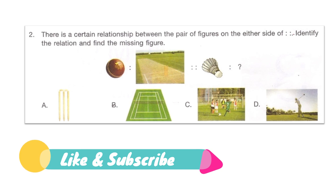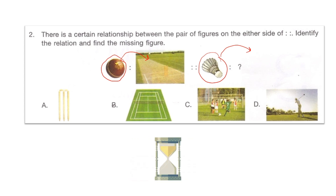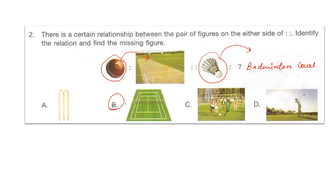Next question: there is a certain relationship between the pair of figures on either side of the four dots. Identify the relation and find the missing figure. A cricket ball is to a cricket pitch — so a shuttlecock is to what? Is your answer option A, B, C, or D? The object and the area of its play is given, so a badminton shuttlecock is played in a badminton court. That is why the right answer is option B, which shows the badminton court.